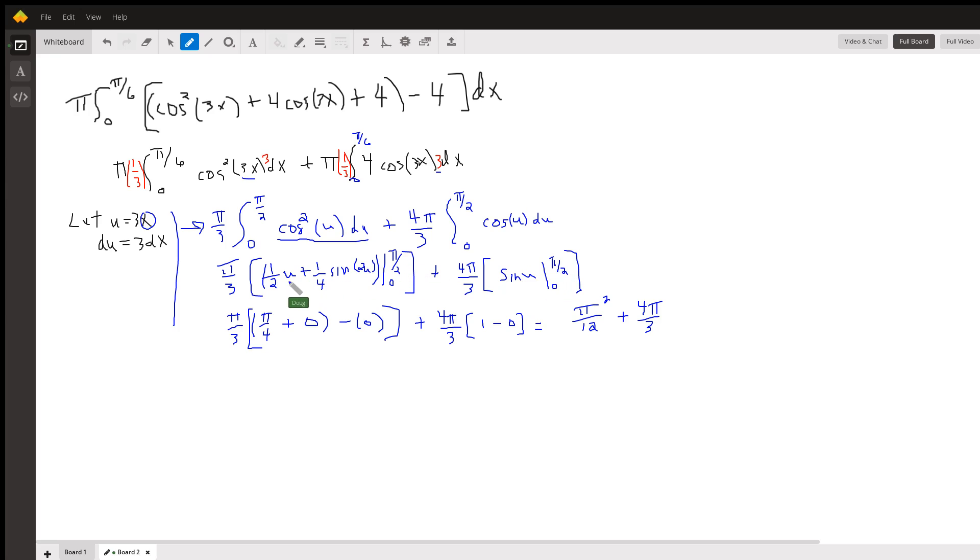If you picture putting pi over 2 in for this u, you get pi over 4. Pi over 2 in for this u, the sine of pi is 0. And then if I put 0, I get another 0. And I'll let you look at the rest of it.